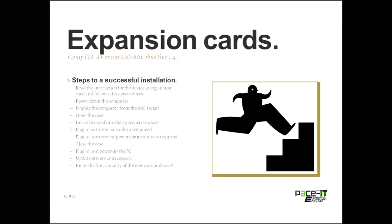The steps to install an expansion card: first, read the instructions for the device. Follow proper safety procedures. Power down the computer and unplug it from the wall socket. Open the case. Insert the card into the appropriate slot. Plug in any internal cabling as required. Plug in any internal power as required — that's particularly for video cards. Close the case. Plug in and power up the PC. Update drivers as necessary, and you've now installed your card.